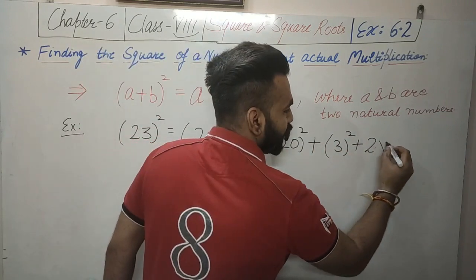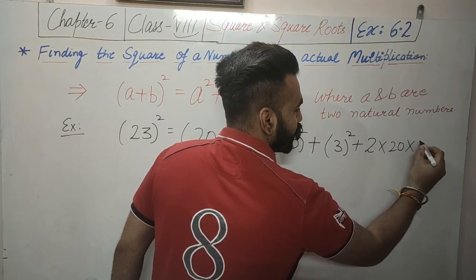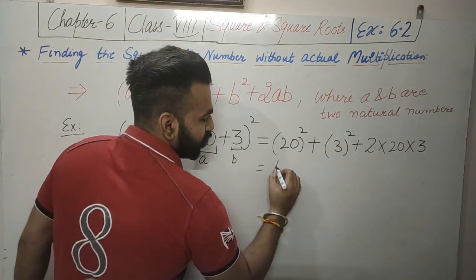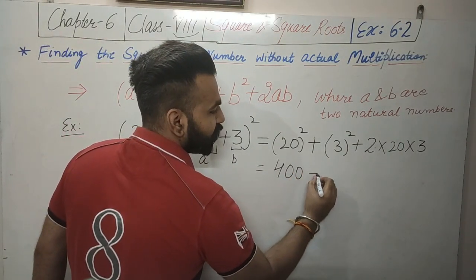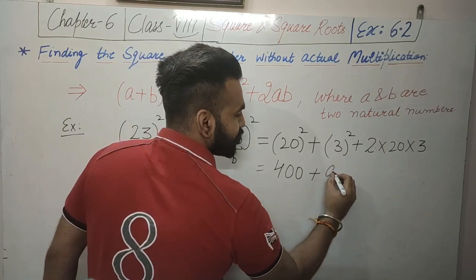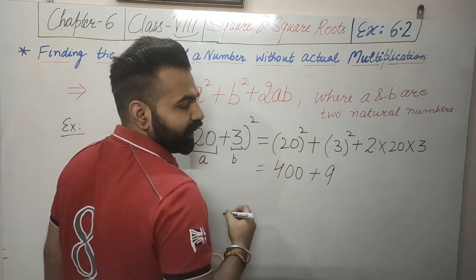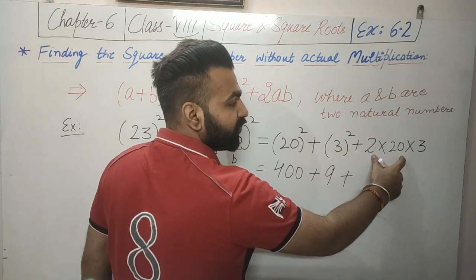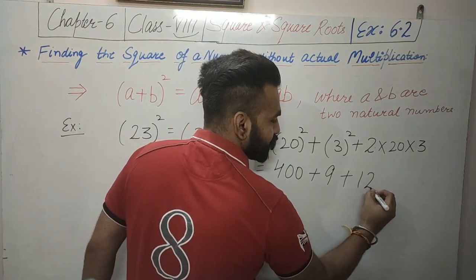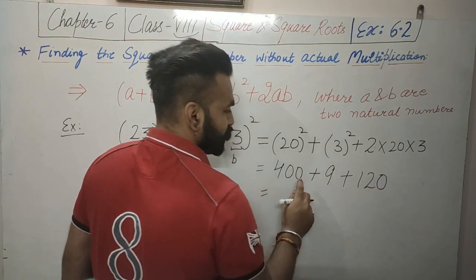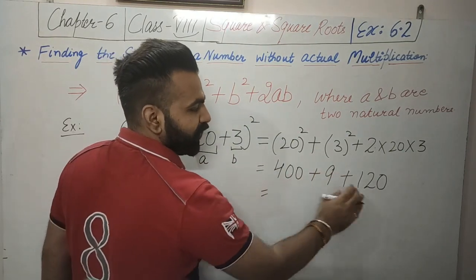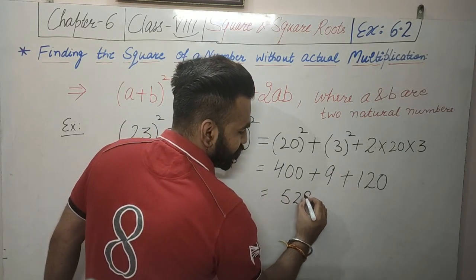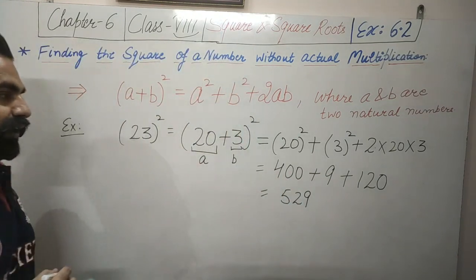A is 20, so we have 20 squared plus 3 squared plus 2 multiplied by 20 into 3. Now 20 squared is 400, 3 squared is 9, and 2 into 20 is 40, and 40 into 3 is 120. So we add 400 plus 120, which gives 520, and 520 plus 9 equals 529.